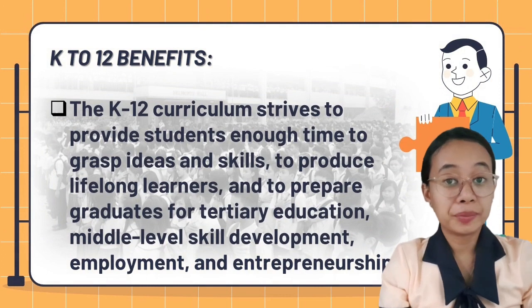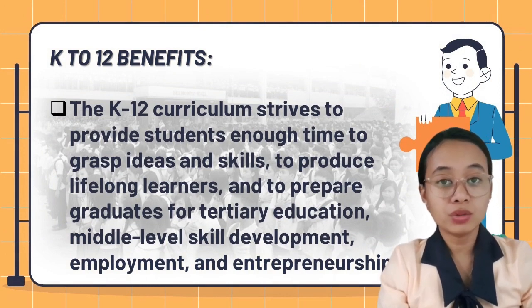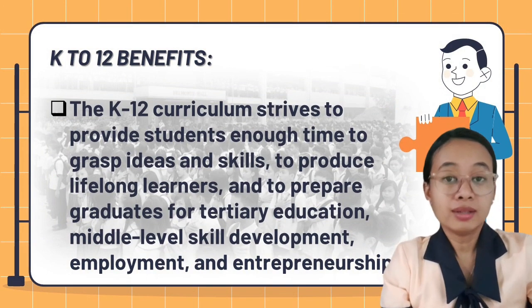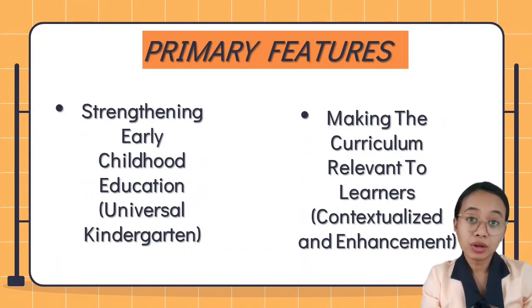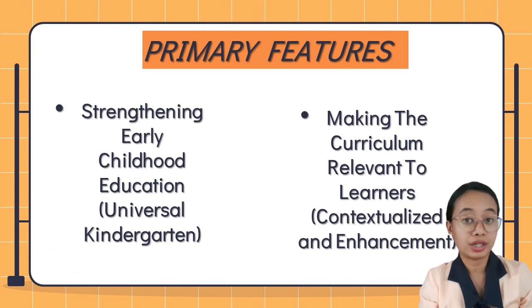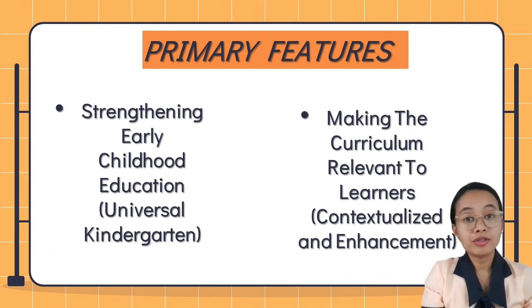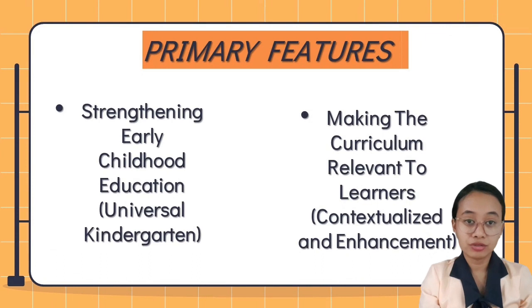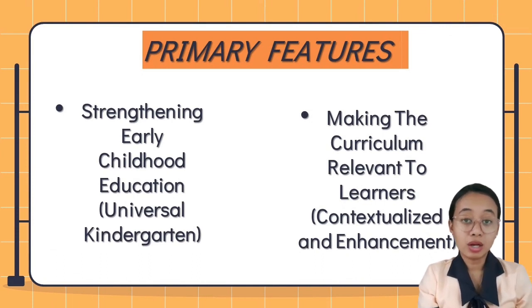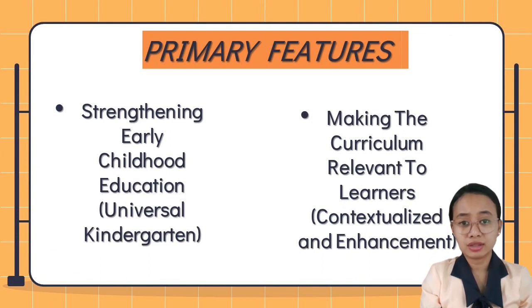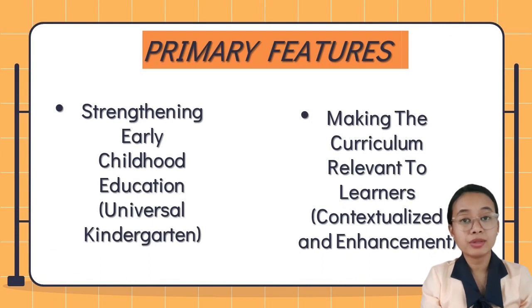Moving forward to the primary features of the K-12 curriculum programs. The first one is strengthening early childhood education, or what we call universal kindergarten. Every Filipino child under the age of five now has access to early childhood education. According to research, students who finish the standards-based kindergarten curriculum are better prepared for primary school.